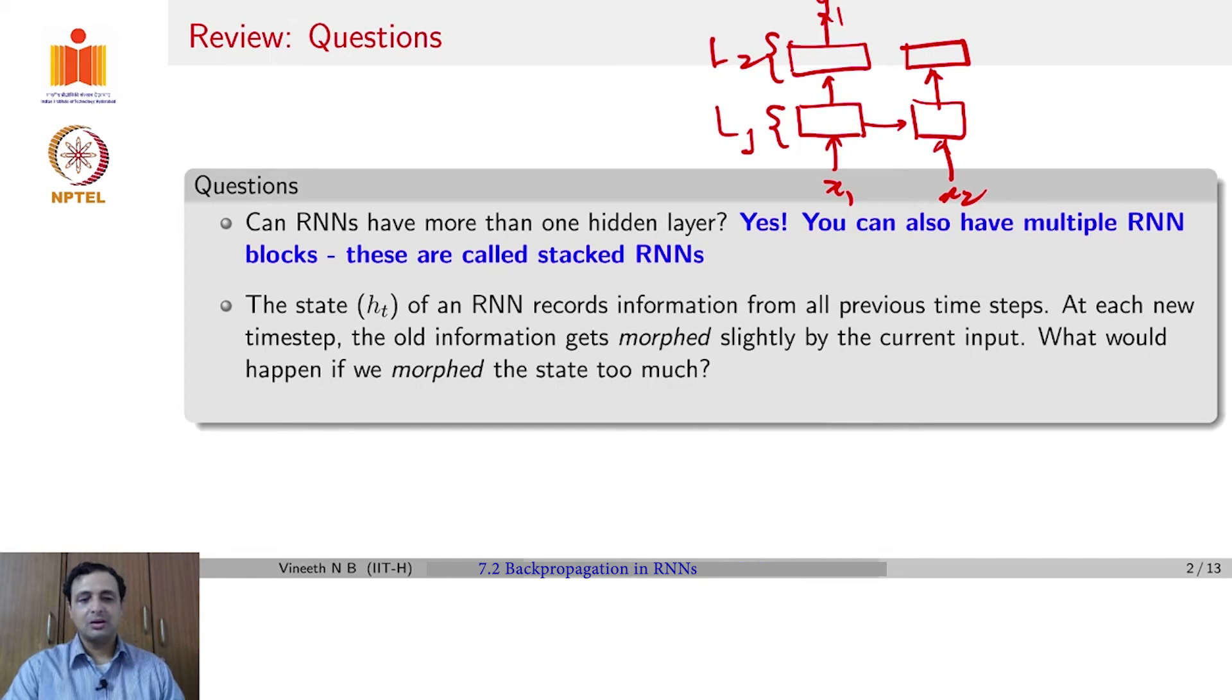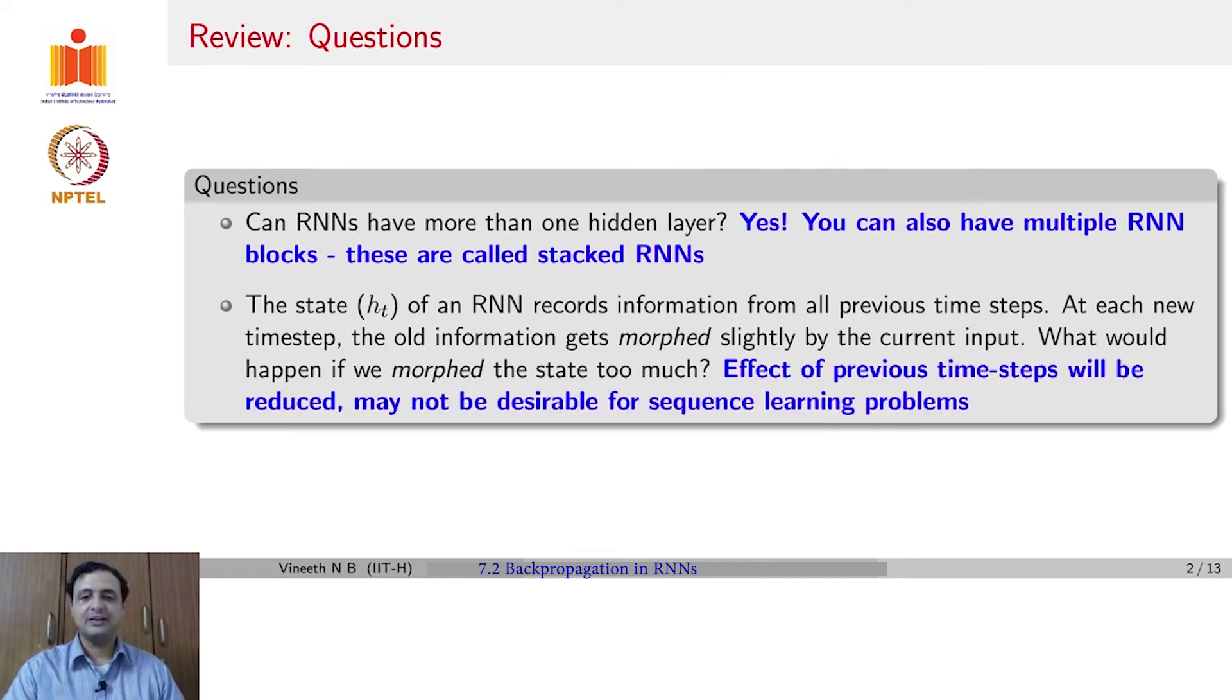Going forward, we asked the question: given that the state of an RNN records information from all previous time steps, what would happen if we morphed the state at a given time too much with the current input? The answer is evident here again. The effect of previous time steps will be reduced, which may not be desirable for sequence learning problems.